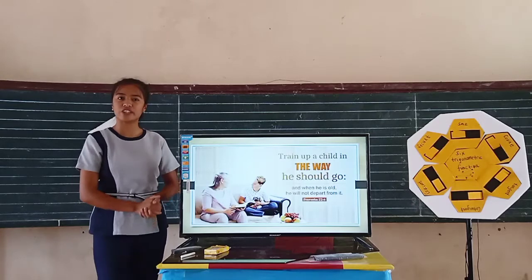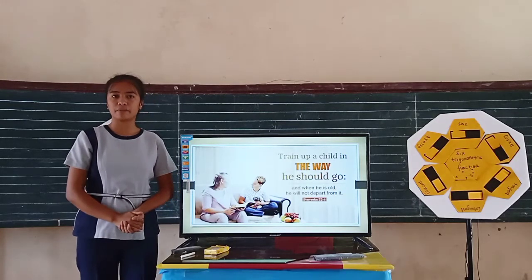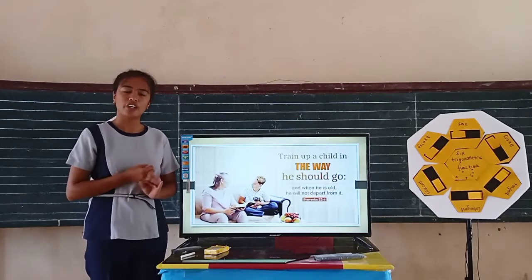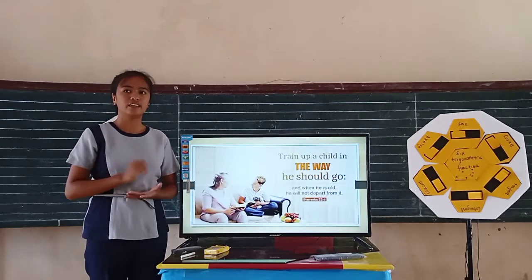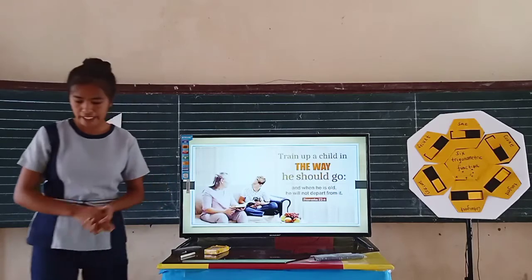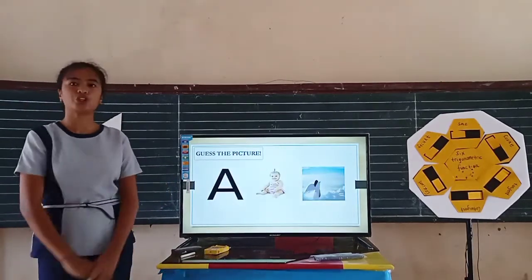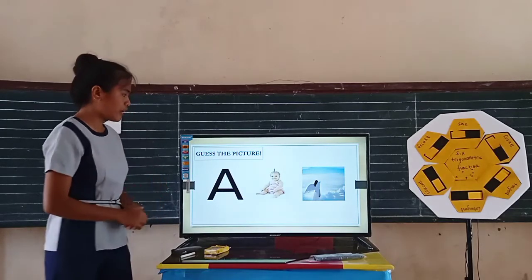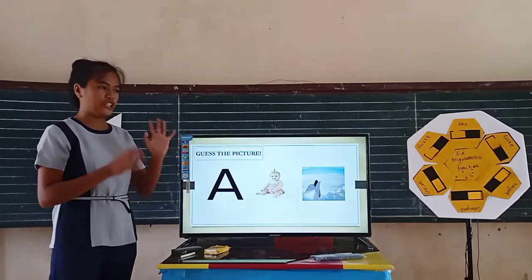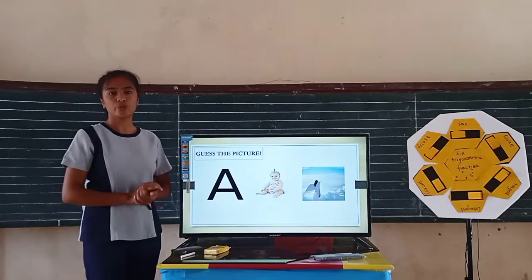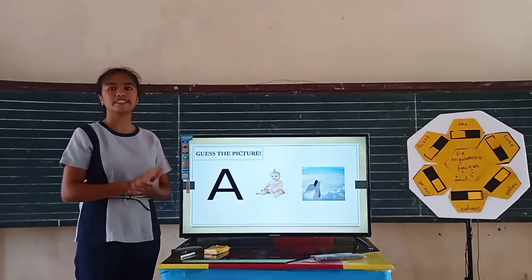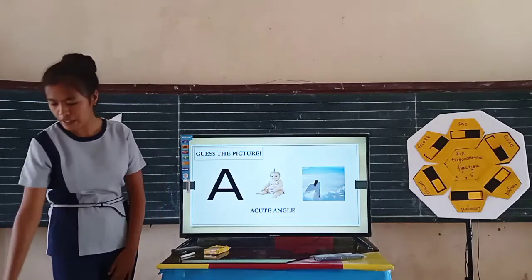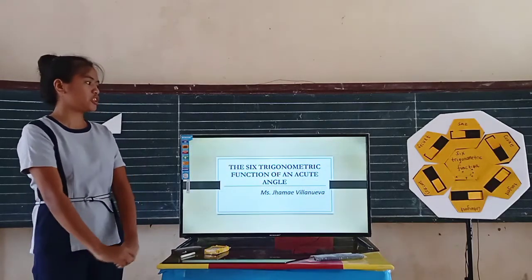It is all about the six trigonometric functions. And what are the six trigonometric functions? Anyone? Okay, Miss Mendoza. Very good. They are sine, cosine, tangent, cotangent, secant, and cosecant. Okay, I have prepared a game called Guess the Picture. I will give points to the students who give the correct answer. As you can see, we have here a letter A, an acute baby, and an angle. So if you combine these three pictures, what word can you create? Anyone? Miss Dalit? Very good. It is an acute angle. So our topic for today is all about the six trigonometric functions of an acute angle.